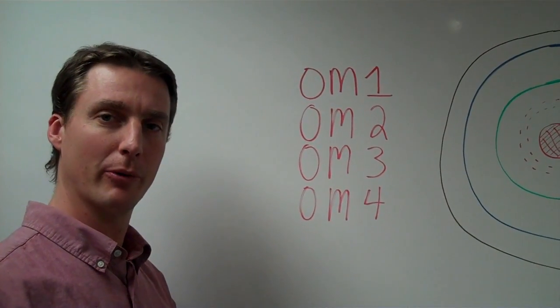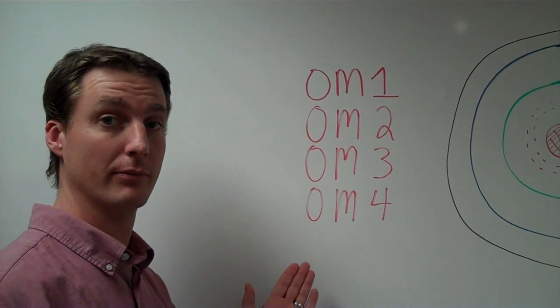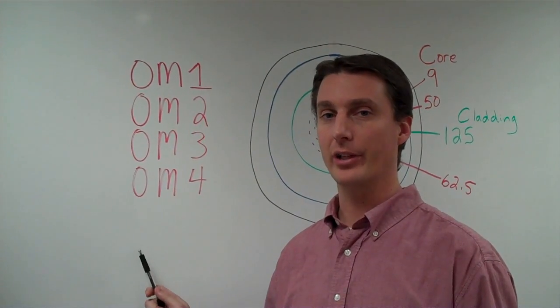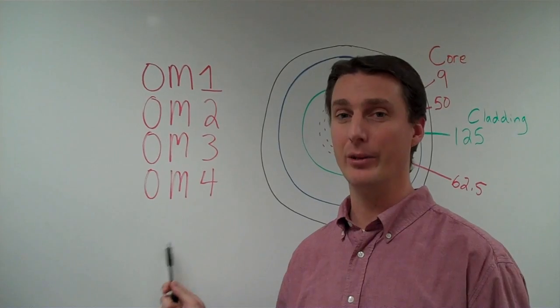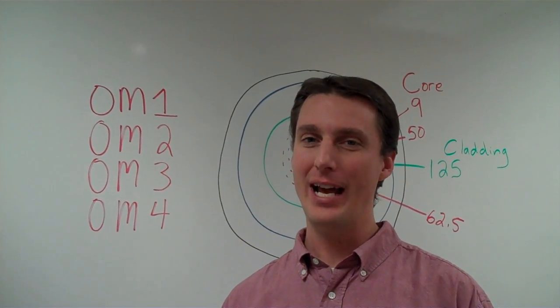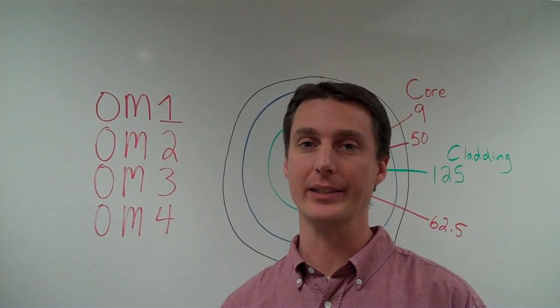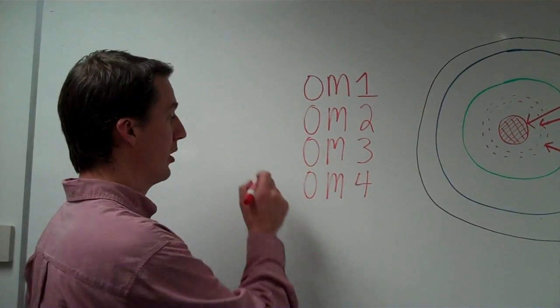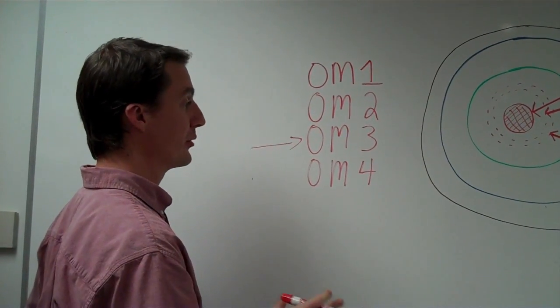You may have also heard people refer to the OM rating. These are ISO standards that quantify the residual level of intermodal dispersion. This basically boils down to how fast and how far you can transmit data. Currently, OM3 is the most commonly used type.